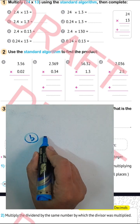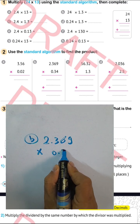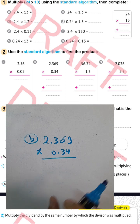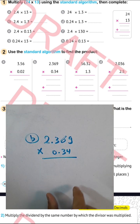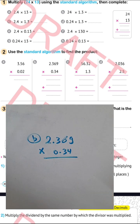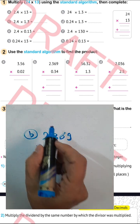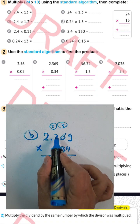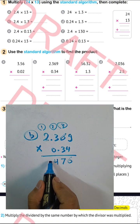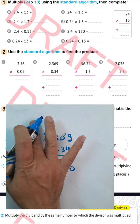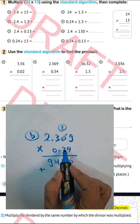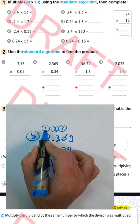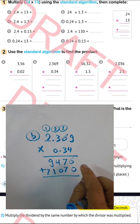Question letter (p): 2.369 times 0.34. The decimal point is after three places and two places, so the result will have the point after five places. Computing without the decimal: 4 times 9 equals 36, write 6 carry 3; 4 times 6 equals 24, plus 3 equals 27, write 7 carry 2; 4 times 3 equals 12, plus 2 equals 14, write 4 carry 1; 4 times 2 equals 8, plus 1 equals 9. Then for the tens row: 3 times 9 equals 27, write 7 carry 2; 3 times 6 equals 18, plus 2 equals 20, write 0 carry 2; 3 times 3 equals 9, plus 2 equals 11, write 1 carry 1; 3 times 2 equals 6, plus 1 equals 7.